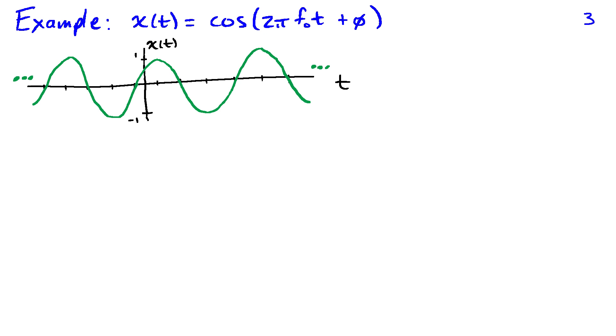So let's take an example of a cosine which I've sketched here: cosine 2 pi f naught t plus phi. The frequency of this cosine is f naught hertz. That means f naught cycles in one second.